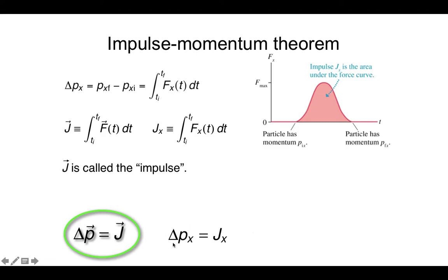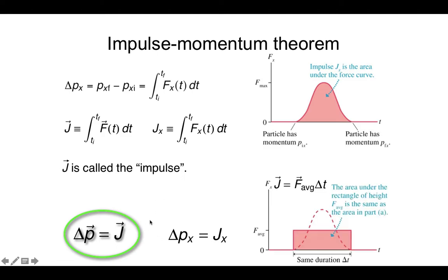The change in momentum in the x direction equals the impulse in the x direction, and this can be decomposed into y and z directions as well. Often we can estimate the impulse rather than taking the careful integration of the complicated function. One way is to know the duration — say the soccer ball hits a face for a few milliseconds — and then estimate the average force over that period of time. This gives a reasonable approximation. We can calculate this by finding the area under the force-time curve, which has units of force times time, and use that quantity to find how much the momentum changed.